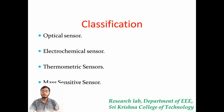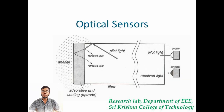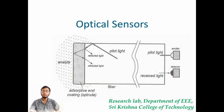I am going to explain you about optical sensors. In an optical sensor, there are emitters and detectors. The emitter sends light to the optical sensor. The light rays fall on the analyte. The light rays may be reflected and refracted. The reflected and refracted lights are received by the detector.